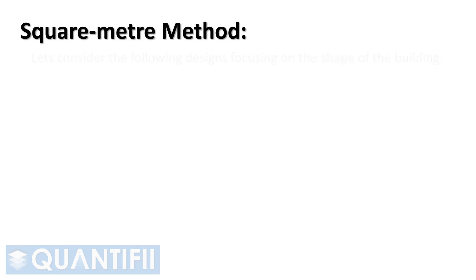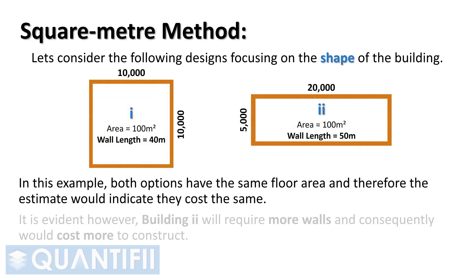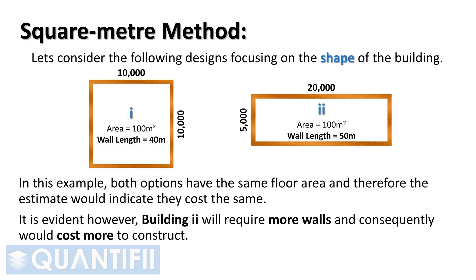Let's consider the following designs focusing on the shape of the building. As you can see in this example, both options have the same floor area, and therefore using the square meter method of estimating would indicate they cost the same. It is evident, however, that building two will require more walls and consequently would cost more to construct.